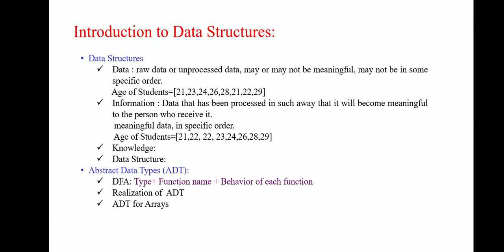Data is nothing but raw data or unprocessed data. For example, age of the students which is taken as an array and this array consists of 21, 23, 24, 26, 28, 21, 22, and 29. Information is data that has been processed in such a way that it will become meaningful to the person who receives it. The information has structure and context.